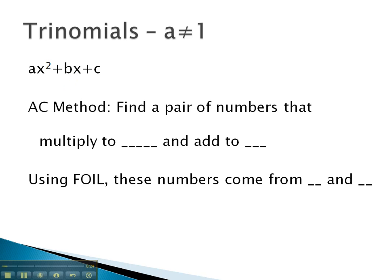We often will factor these using what is called the AC method, which gets its name because we're going to find a special pair of numbers that multiply to a times c and add to the middle number, b.